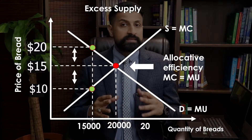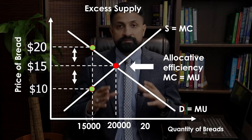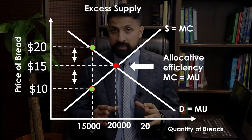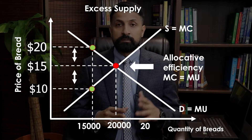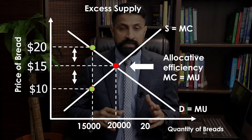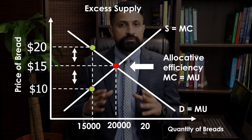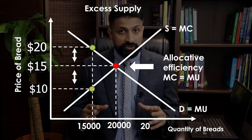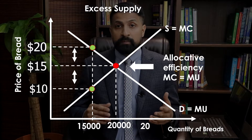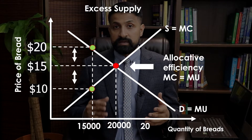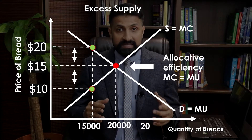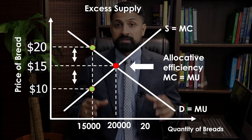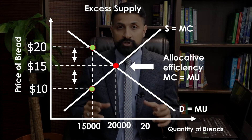In this example, if society produces only 15,000 pieces of bread, there would be a gap between the marginal benefit and the marginal cost. Society would be better off in terms of consumer satisfaction and producer profit if the market price is $15, because at this price 20,000 breads will be sold, which is the best combination of marginal cost and marginal benefit.